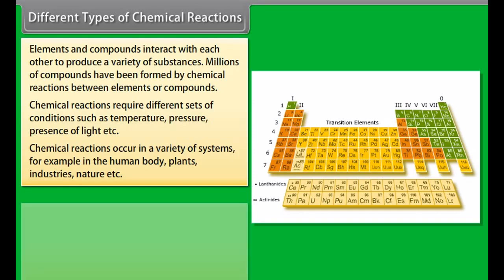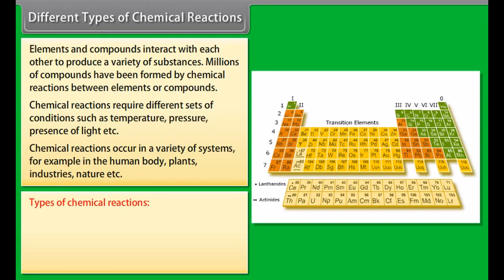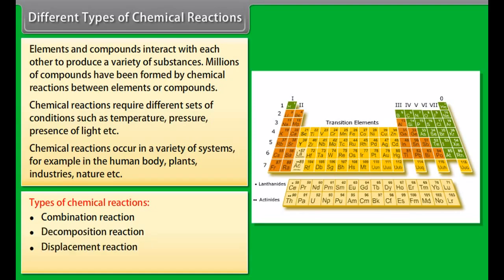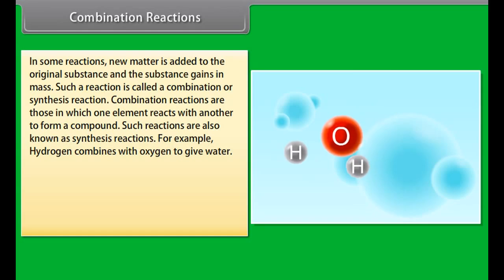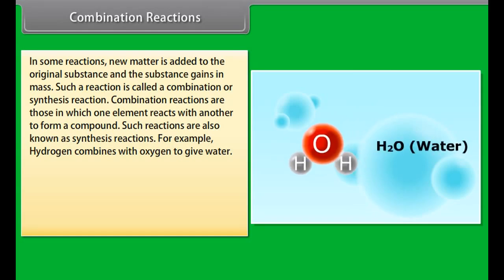Elements and compounds interact with each other to produce a variety of substances. Chemical reactions require different conditions such as temperature, pressure, and presence of light, and occur in systems like the human body, plants, industries, and nature. The types of chemical reactions are: combination reactions, decomposition reactions, displacement reactions, and double displacement reactions.